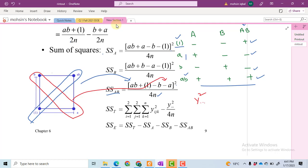To calculate the sum of squares of the error, as previously, we have to subtract sum of squares of A, sum of squares of B, and sum of squares of AB from sum of squares total.